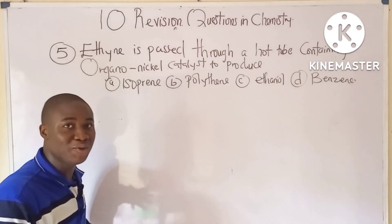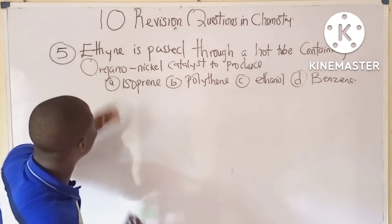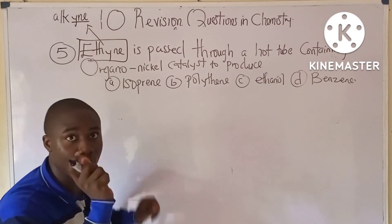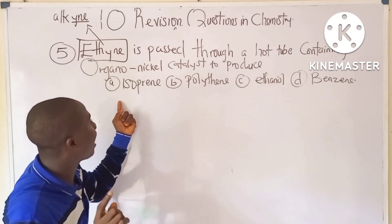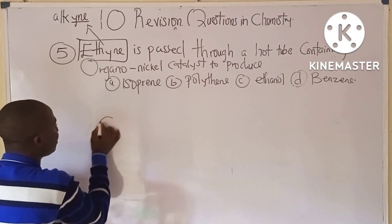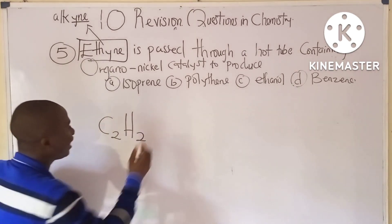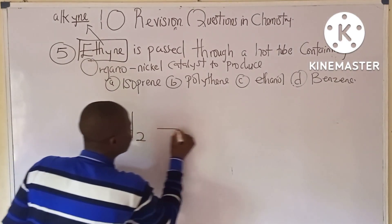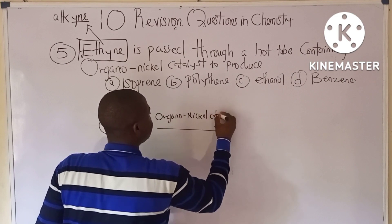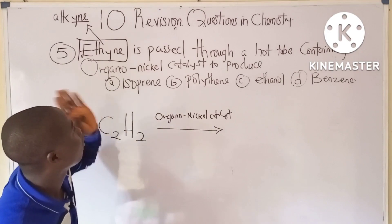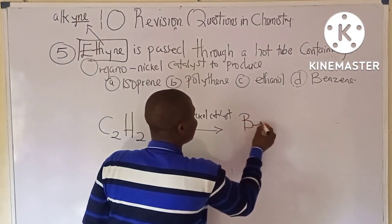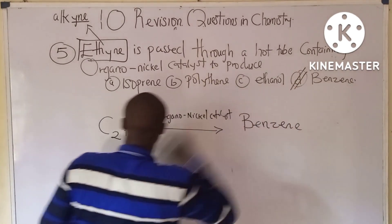Question five: acetylene (an alkyne) is passed through a hot tube containing organo-nickel catalyst. Acetylene has the chemical formula C2H2. When acetylene is passed through a red-hot tube with organo-nickel catalyst, the compound produced is benzene.